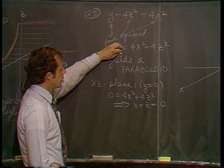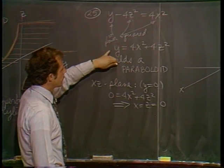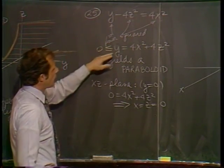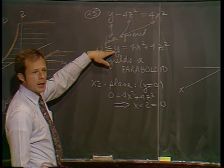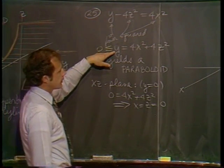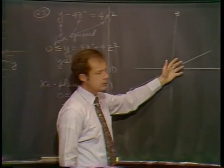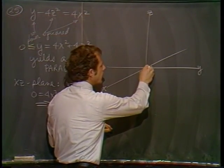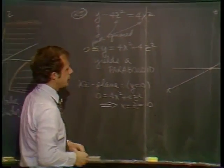You get 0 equals 4x squared plus 4z squared. And that implies that x and z both have to be equal to 0. So you get the point - we've seen this before in another situation. So in the xz plane, we get nothing but a point.